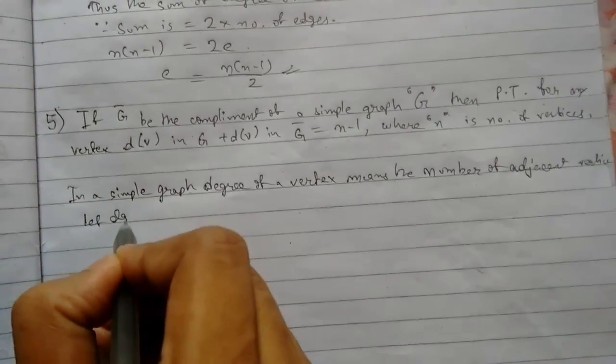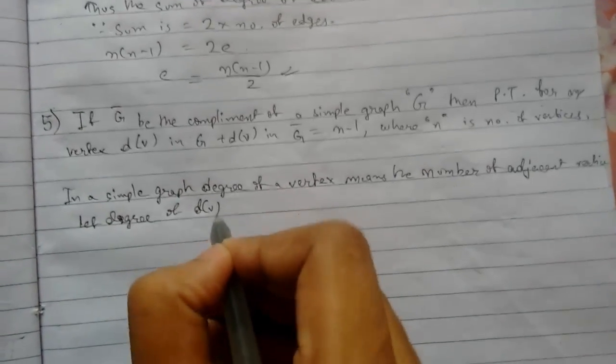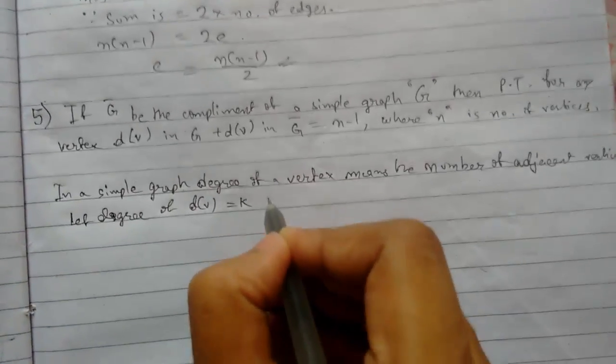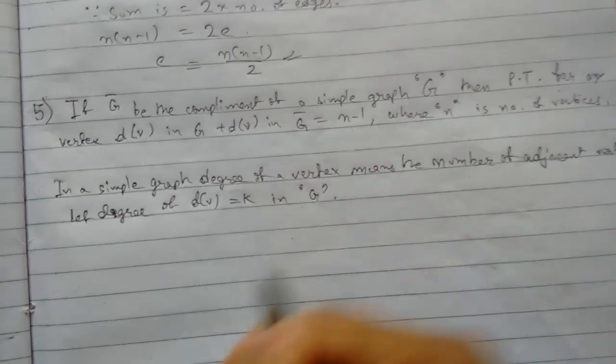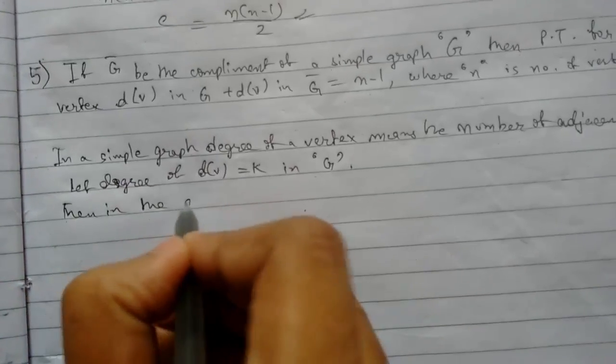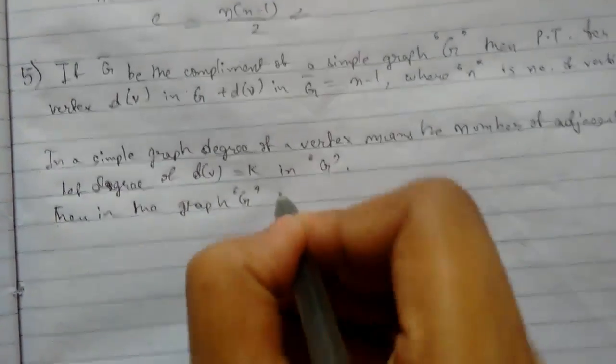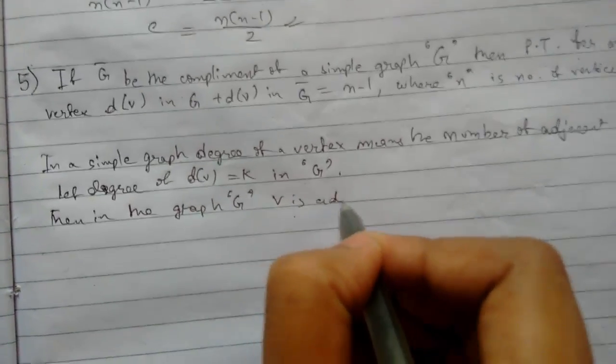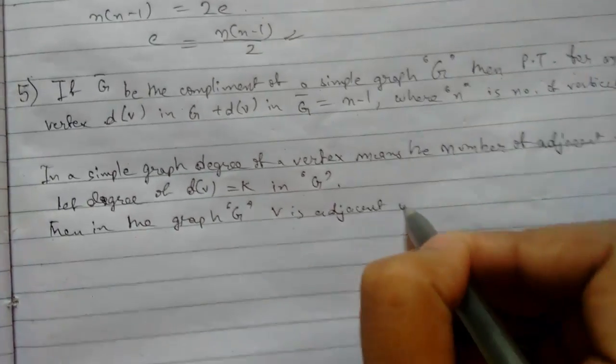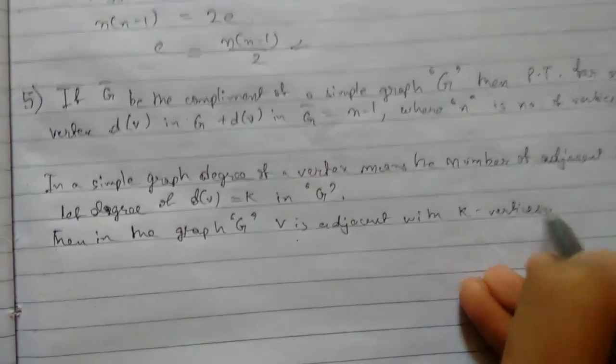Let degree of vertex equals k in g graph. Then in the graph g, v is adjacent with k vertices.